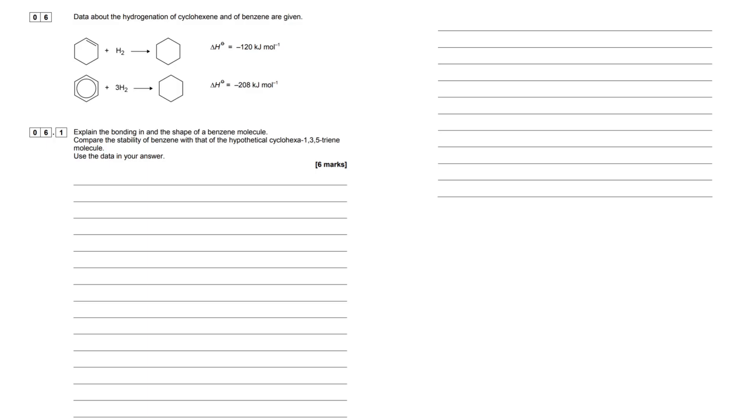Let's read through the question. We're given data about the hydrogenation of cyclohexene and benzene with enthalpy values of minus 120 and minus 208. They want us to explain the bonding and shape of a benzene molecule, and compare the stability of benzene with the hypothetical cyclohexane-1,3,5-triene molecule using data.